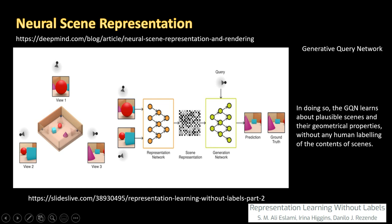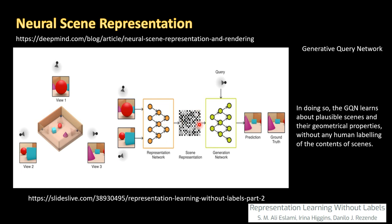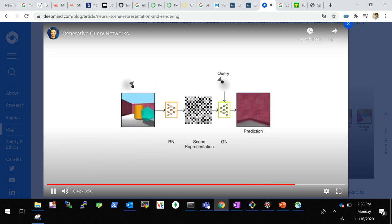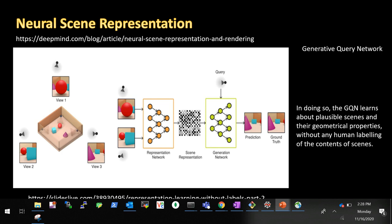This is a really interesting paper from Google DeepMind, which I came across at a representation learning workshop. The idea is you have a scene, give two views as input, and a representation network learns the representation from these two views. Then you give a query as a new view the network hasn't seen, and it predicts that new view. Once the network has learned the representation you can query any view and it will generate it, having learned the semantics, geometry, and shapes of different objects.